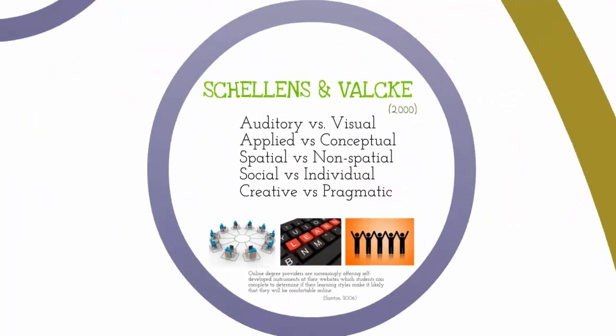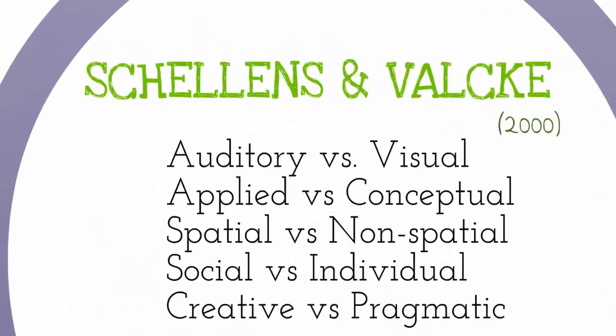Thinking back to Jung's personality types, you can see some similarities with these models. Schellens and Valky suggest that we can measure our learning styles along several bipolar dimensions: auditory versus visual, applied versus conceptual, spatial versus non-spatial, social versus individual, and creative versus pragmatic.